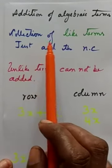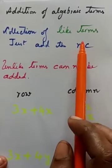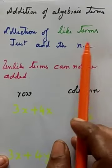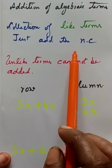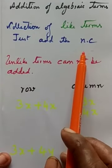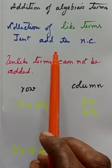Edition of algebraic terms is nothing but collection of like terms and then just add the numerical coefficients. Basic addition rules also apply here.